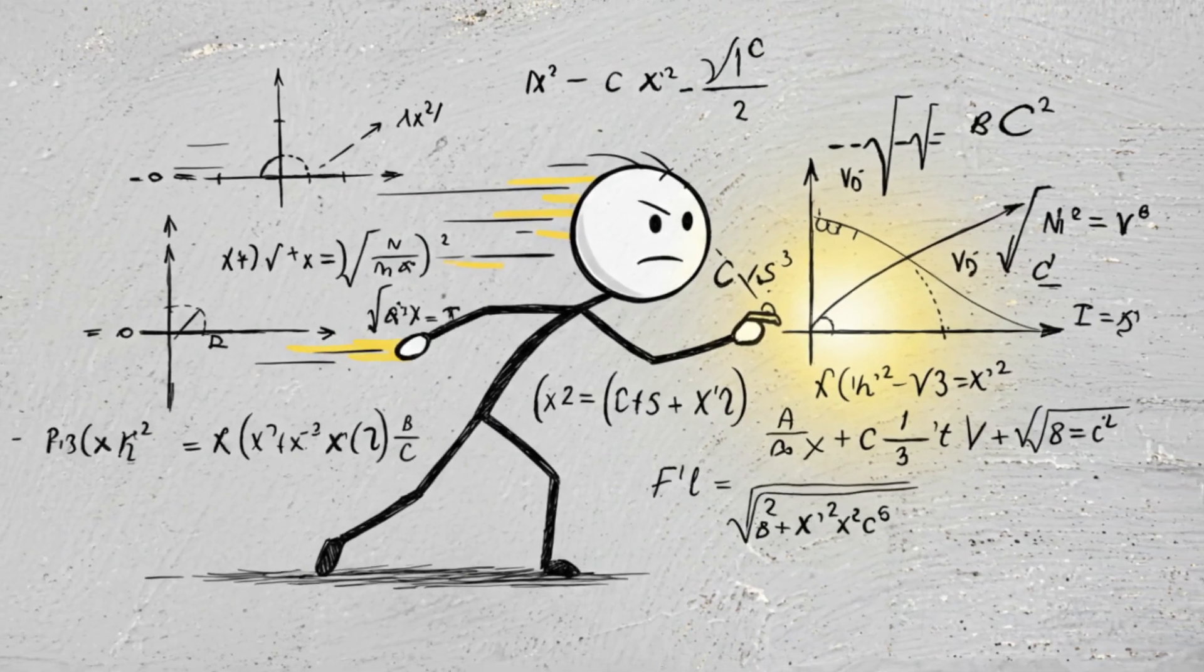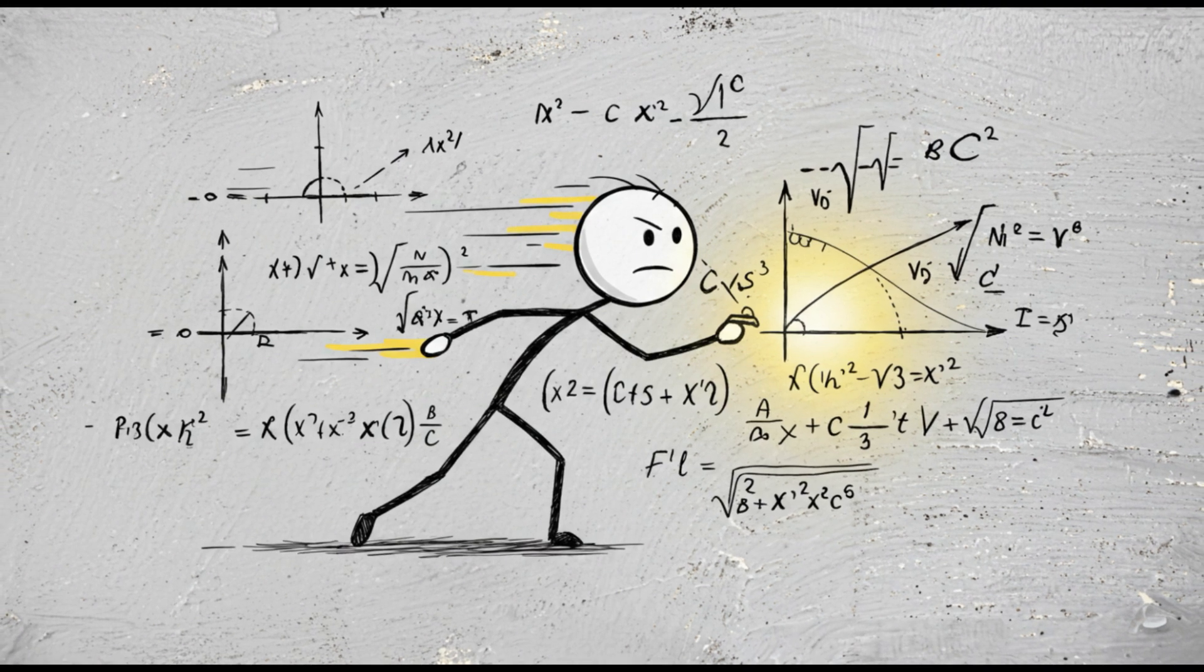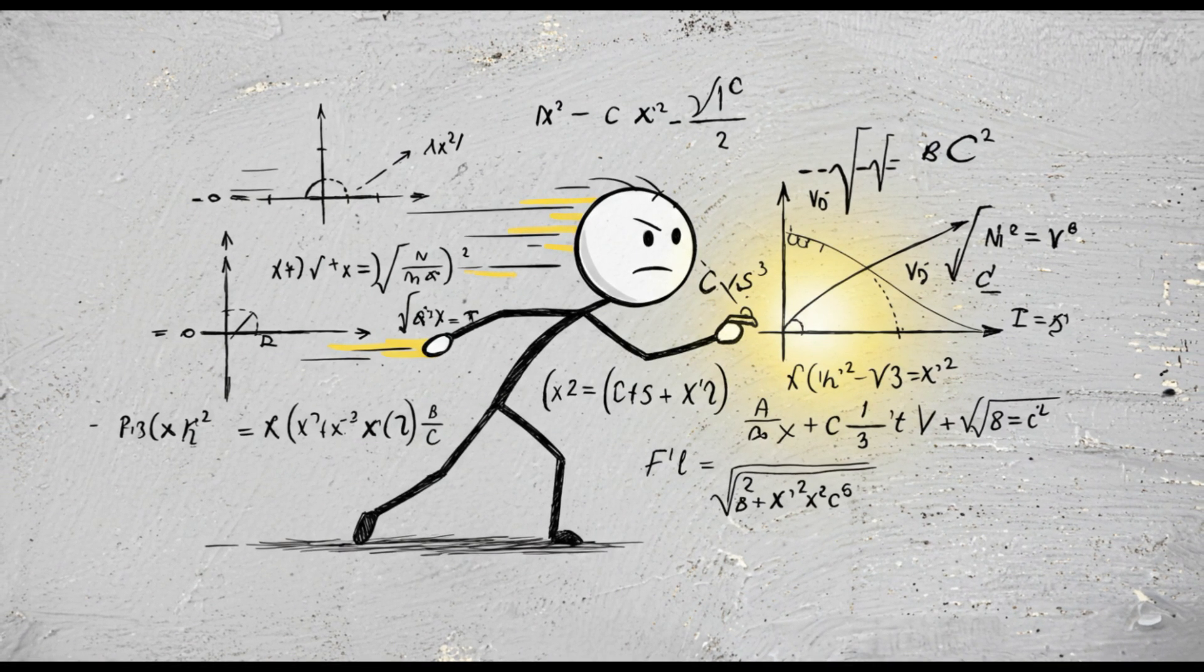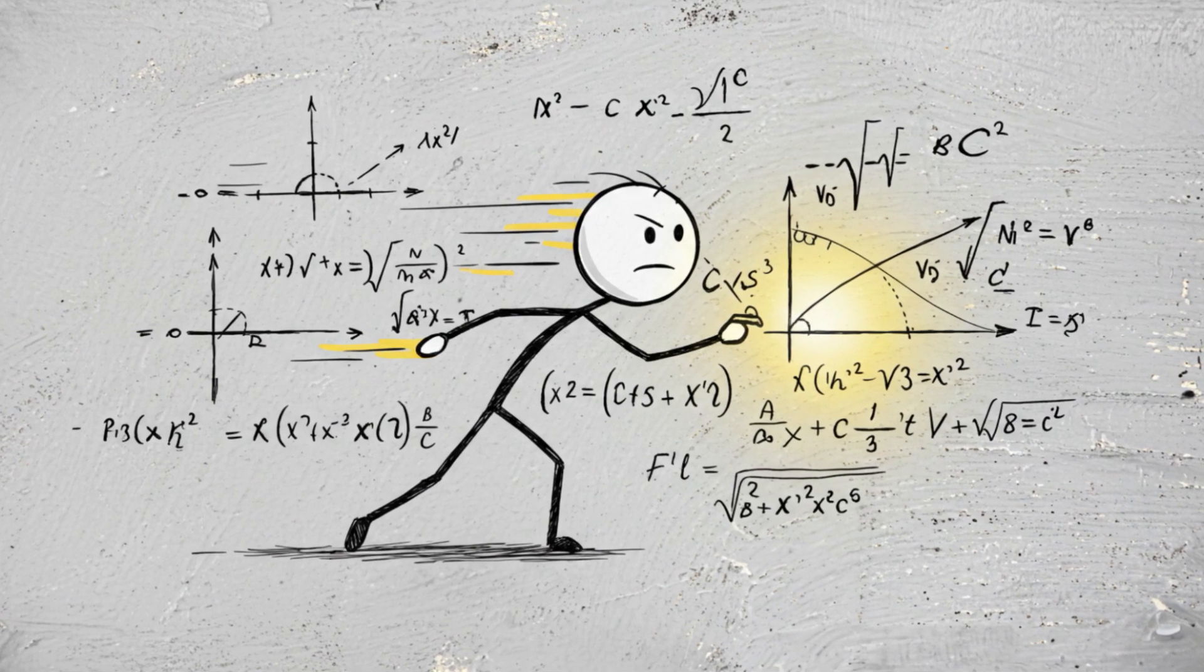Have you ever seen those people who solve impossible calculations in seconds, like they're machines? They multiply 89 by 97 in their heads without even blinking. We look and think, my God, this person's a genius.